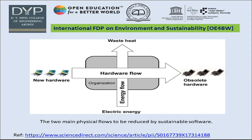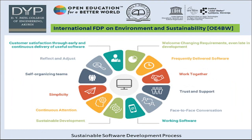Not only software but hardware also takes part: new hardware flows toward obsolete hardware, energy flows in, and converts to waste heat. These two main physical flows — material and energy — are to be reduced by sustainable software. The sustainable software development process includes: welcoming changing requirements, frequently delivered software, working together with trust and support, face-to-face conversation, working software, sustainable development, continuous attention, simplicity, self-organizing teams, reflecting and adjusting, and customer satisfaction through early and continuous delivery of useful software.